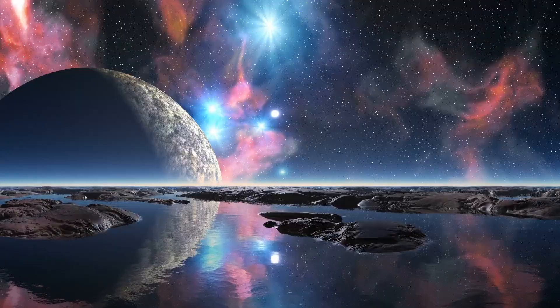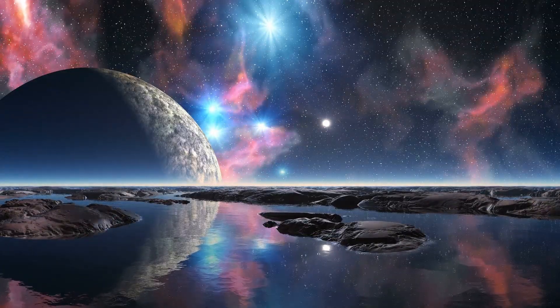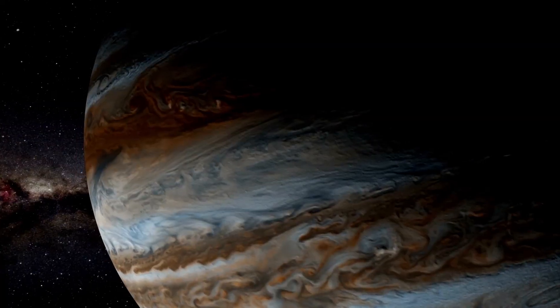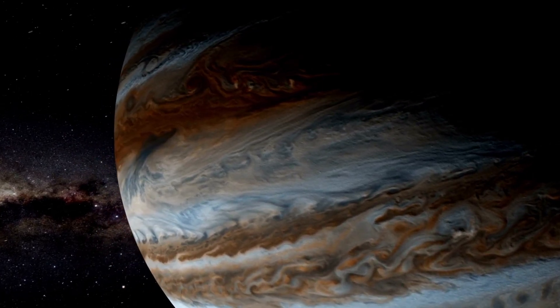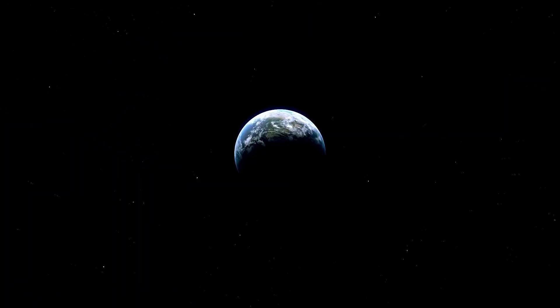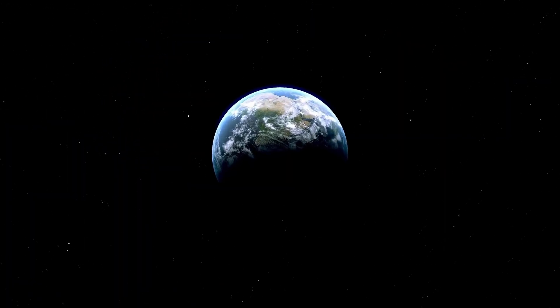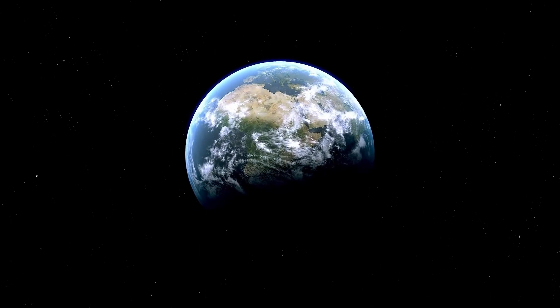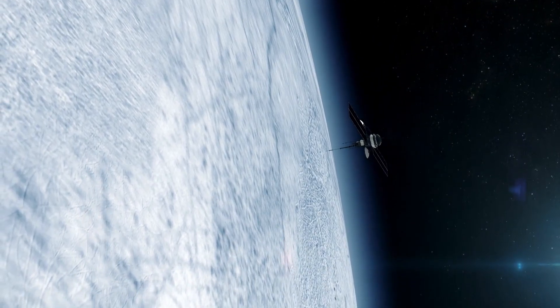A few years later, Voyager 2 arrived at Uranus, a planet shrouded in mystery, its spin axis tilted at an extraordinary 98 degrees. The spacecraft sent back breathtaking images of the ice giant, uncovering two new rings and 11 previously unknown moons.